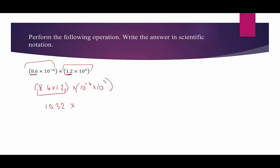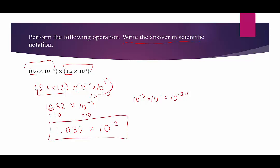Using the properties of exponents, this is same-base multiplication, so we add the exponents: 10 to the negative 6 plus 3, which is 10 to the negative 3. But are we done? No — it says write the answer in scientific notation, and 10.32 is ever so slightly bigger than 10. We need to divide this factor by 10, which moves the decimal point and gives us a number between 1 and 10. If we divide one factor by 10, we must multiply the other by 10: 10 to the negative 3 times 10 to the first, giving 10 to the negative 3 plus 1, which is negative 2. Our final answer is 1.032 times 10 to the negative 2.